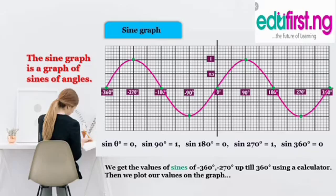So, the graph you're seeing is actually a graph of sine theta from minus 360 degrees to 360 degrees. In most cases, if you're asked to plot a sine graph, your values are going to fall under this range. It's important. How do we get the values? We use a calculator.